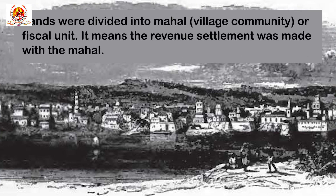Mahalwari Settlement was introduced by Lord William Bentinck in 1833. It was introduced in the northwestern frontier province, the Himalayan foothills and Gangetic valley, Punjab, and central provinces — that is, UP, Madhya Pradesh, etc. The land was divided into mahals, that is village communities or fiscal units, meaning the revenue settlement was made with the mahal — the village community. The village headmen, that is the lambardars, were responsible for paying the revenue to the state. Sometimes a mahal was constituted by one or more villages. The state was to appropriate two-thirds of the net income of the land, and the settlement was to be renewed every 30 years. By 1929, about 29% of the cultivable land in India was under this settlement.